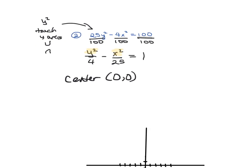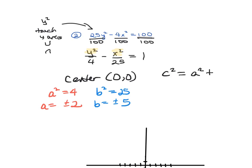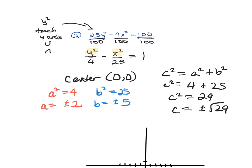Remember, a squared is always first. So a squared equals 4, and a equals plus and minus 2. My b squared is 25, so b equals plus and minus 5. Now using c squared equals a squared plus b squared: a squared is 4, b squared is 25, giving c squared equals 29. Since 29 can't be broken down, c equals plus and minus square root of 29.